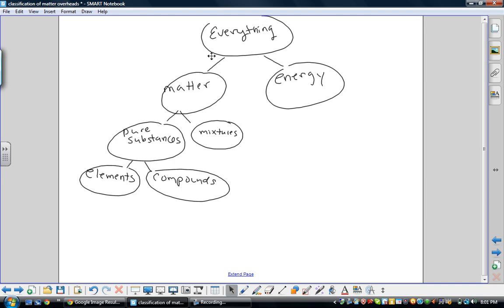We started out by talking about everything and categorizing everything into one of two categories: matter and energy. Matter has mass and takes up space. Another way of saying that is that it has density. Energy doesn't. There isn't anything that has mass that doesn't take up space.